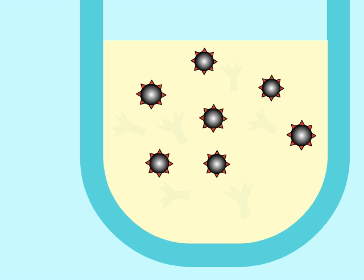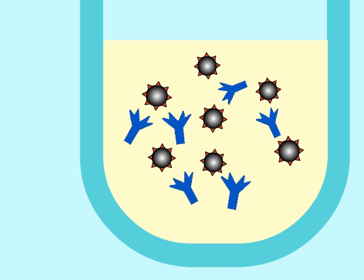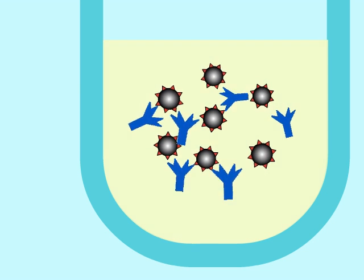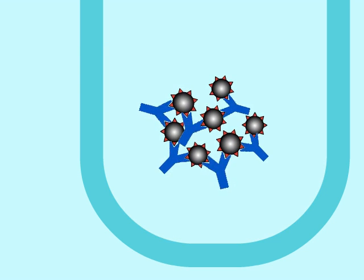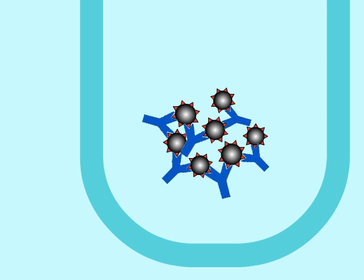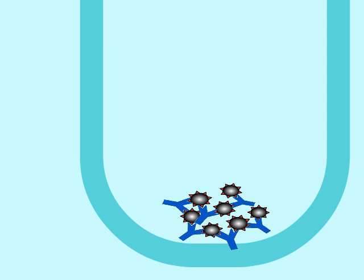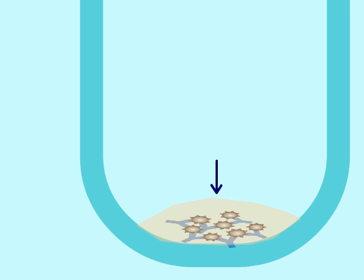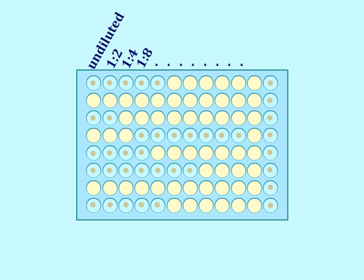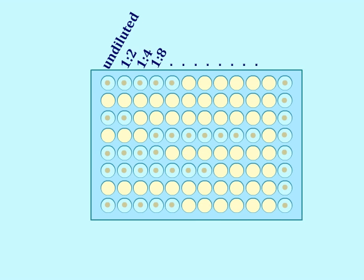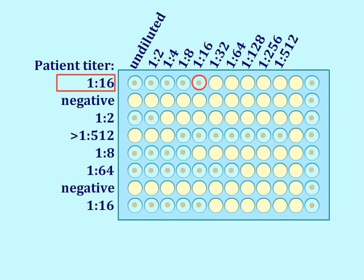However, when specific antibody is present, it binds to and cross-links the beads. This causes the beads to clump and form large aggregates that sink to the bottom of the round-bottom wells, making the suspension clear instead of milky. The aggregates settle into a pellet or button at the bottom of the well. You will see the button in any well with enough specific antibody to precipitate the beads, but when the antibody is diluted out, the button no longer appears. The patient's antibody titer is the last dilution of serum that produces a button.